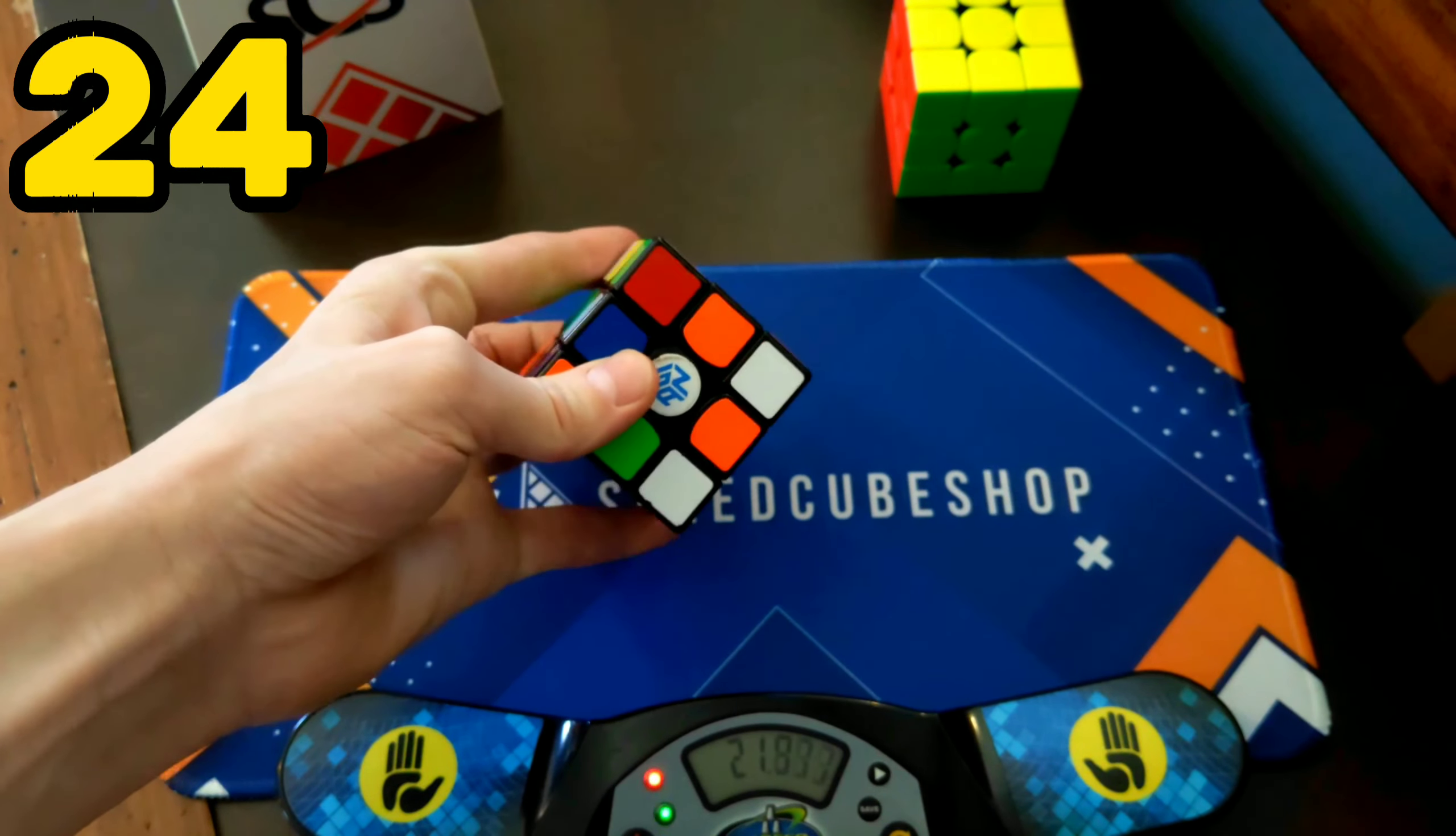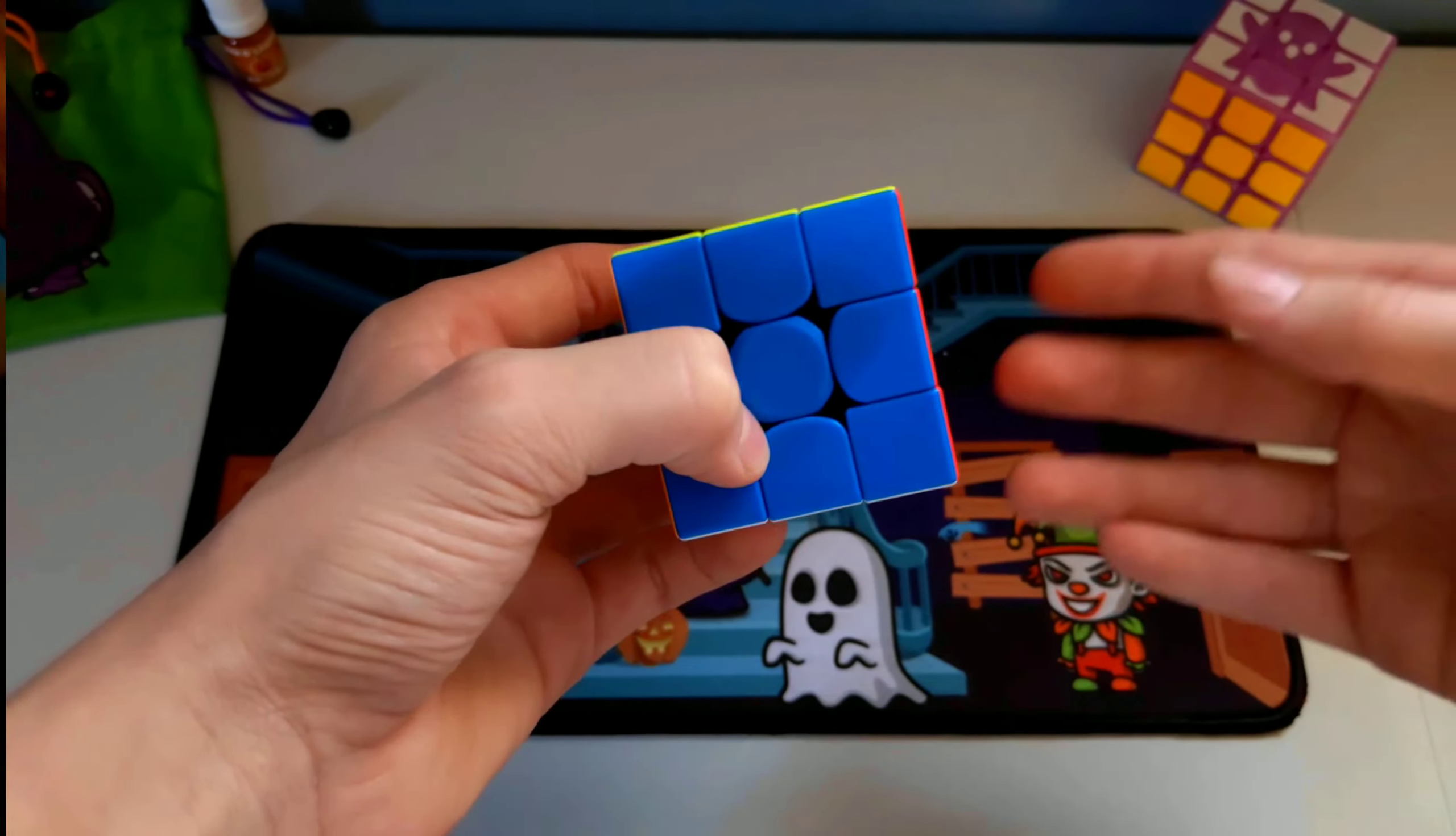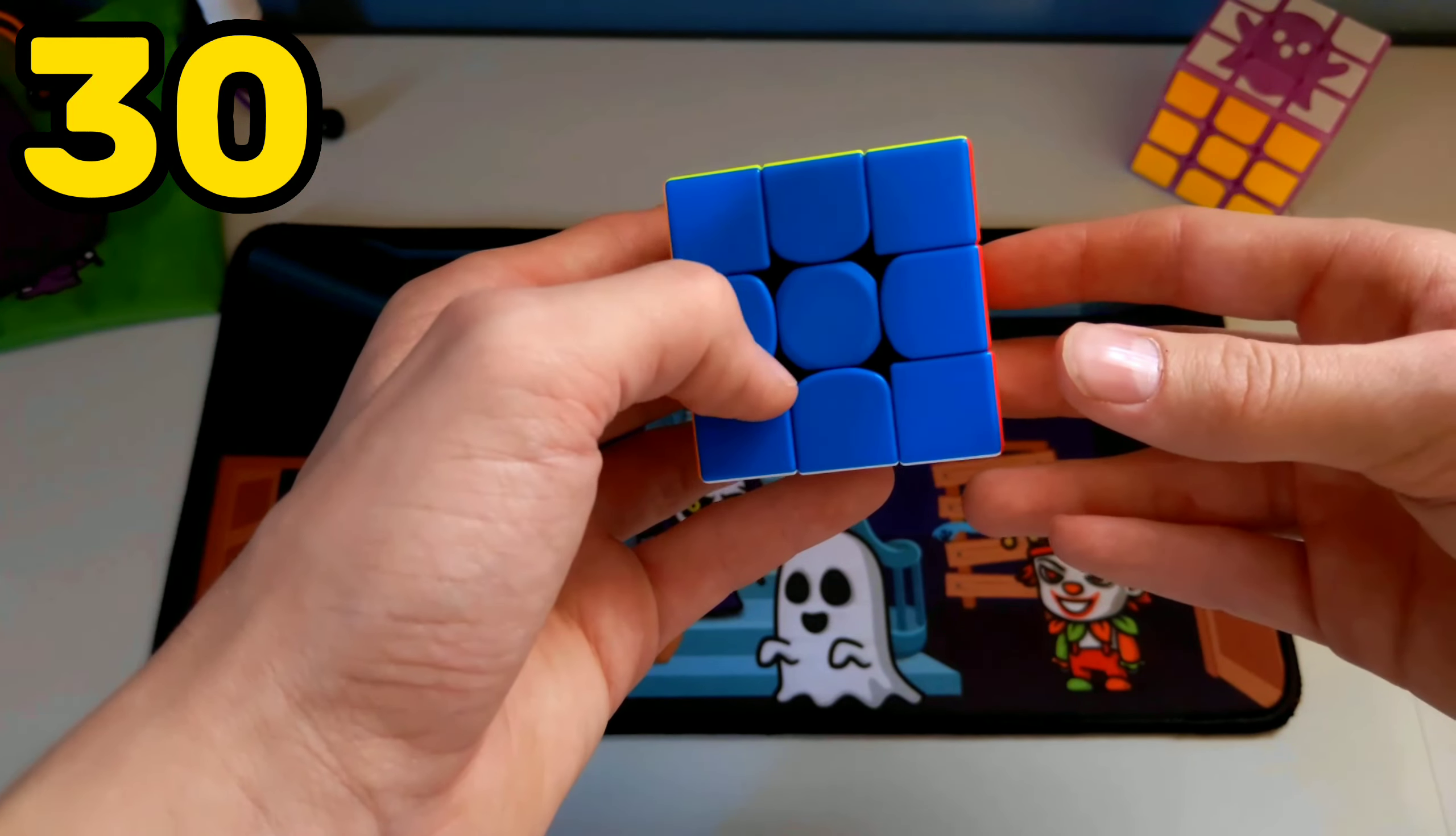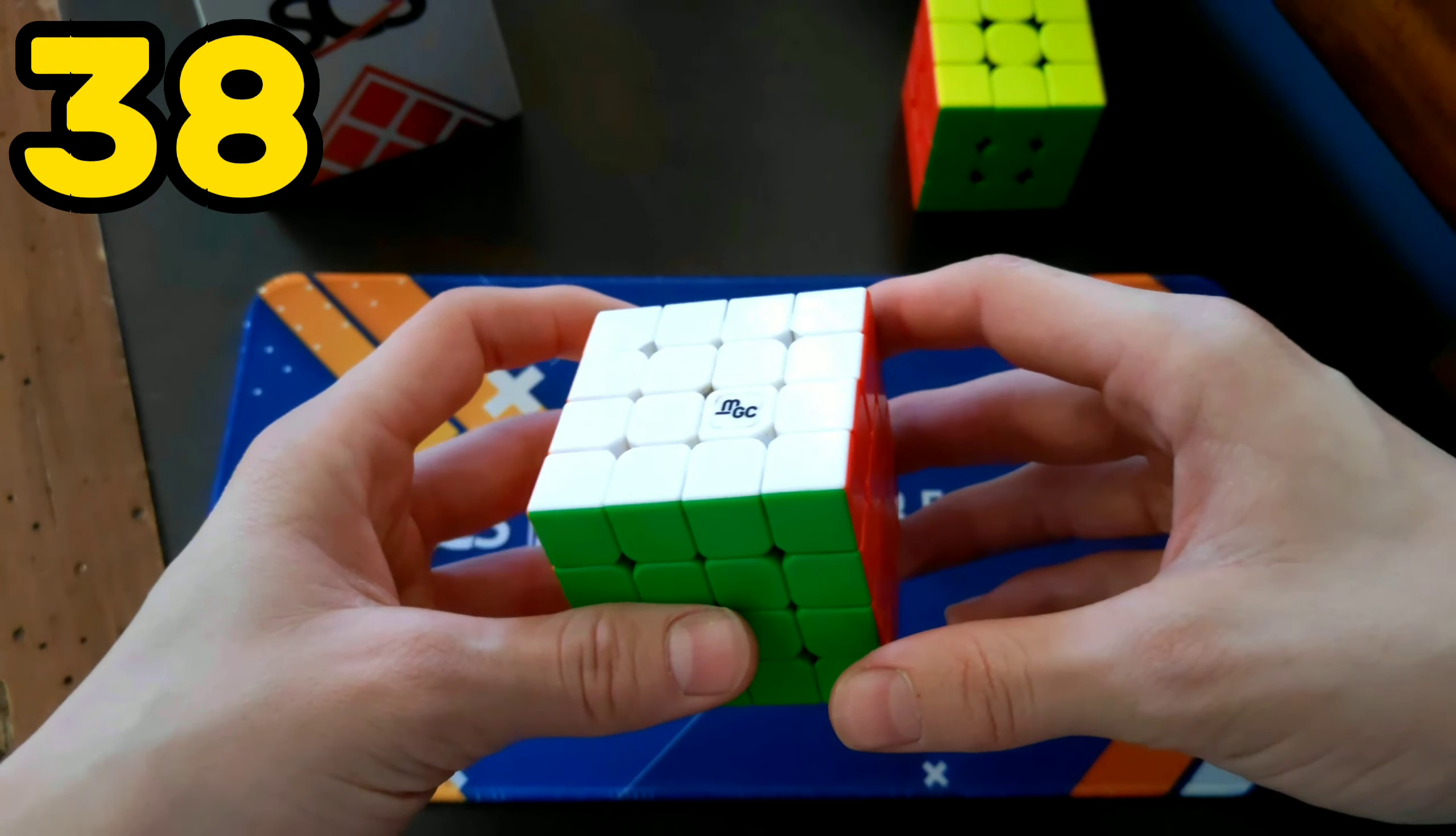3x3 one hand is solving the cube as fast as you can with only one hand. 3x3 fewest moves is where you try to solve the cube in fewest moves possible. Anyone can do it, but only the smart ones are good at it.